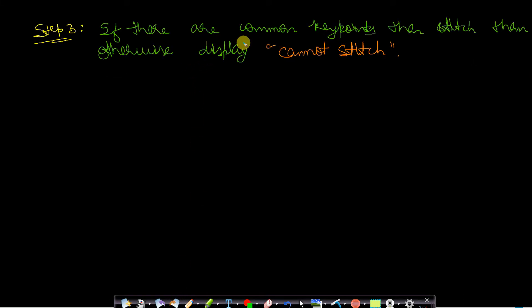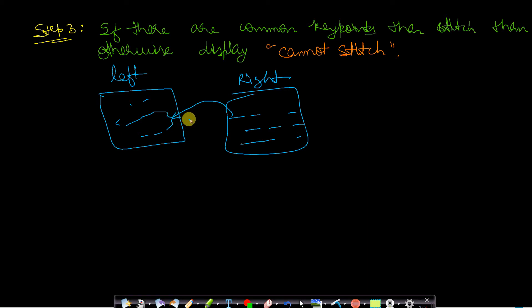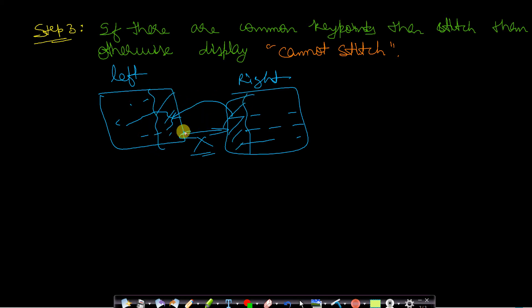The third step: if there are common key points, stitch the images; otherwise display 'cannot stitch.' If the left image is totally independent from the right image, the key points will be completely different and cannot be made to overlap, so they cannot be stitched together. Images must have some common overlapping part where key points are exactly the same in both images.